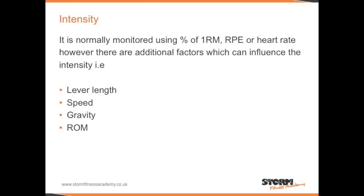Gravity: if we work against gravity, this can also increase the intensity of an exercise — for example, increasing the gradient on a treadmill, or doing abdominal exercises on an incline. Finally, range of motion: if we are carrying out a squat and we squat down to a bench so the knees are at 90 degrees, that is going to be less challenging than squatting all the way down to the floor.